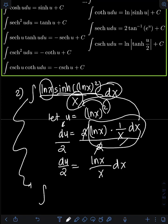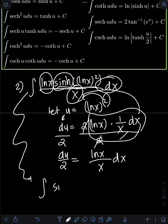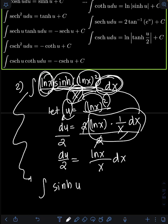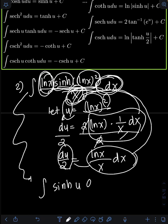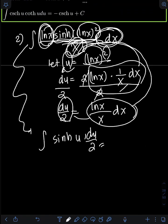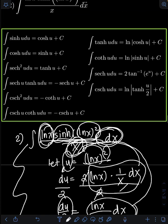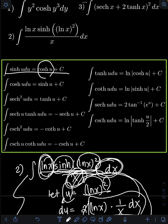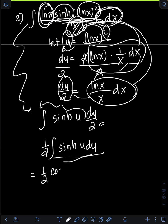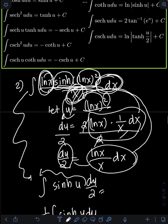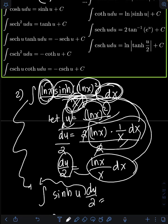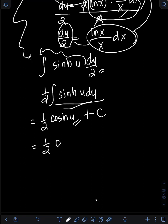If we substitute into the original integral, we will have the integral of sinh(u) — where (ln x)² is now u — and ln(x)/x dx is now du/2. This 1/2 is just a constant, so put it in front: one-half integral of sinh(u) du. The integral of sinh(u) du equals cosh(u) + C. So we will have one-half cosh(u) + C. Transforming back, u equals (ln x)², so the final answer is one-half cosh((ln x)²) + C.